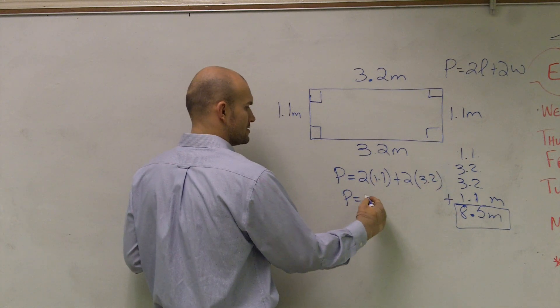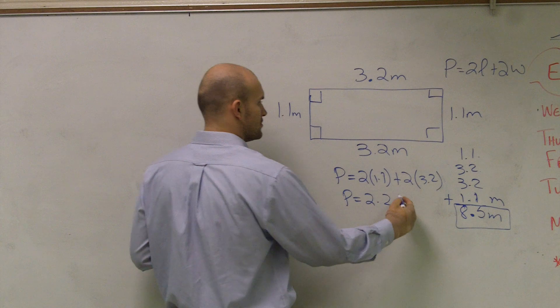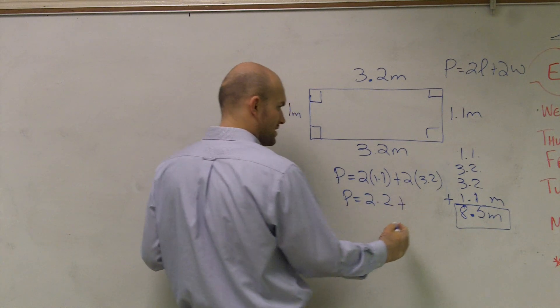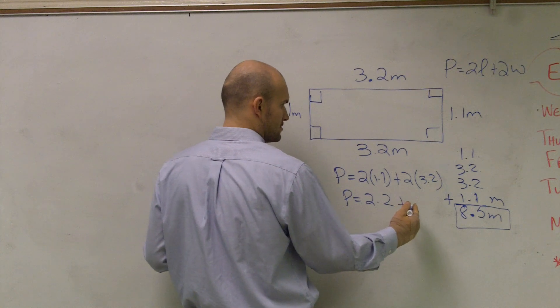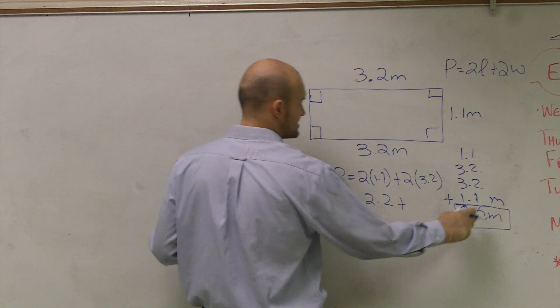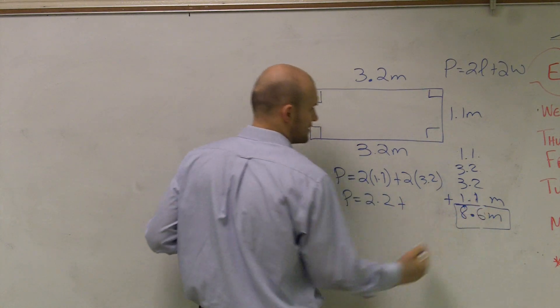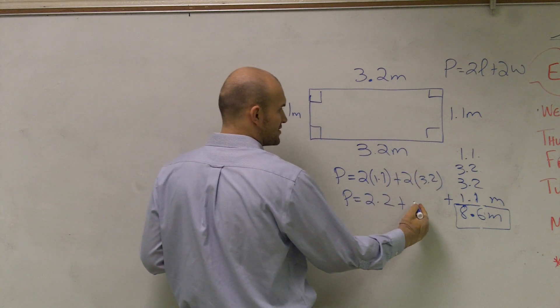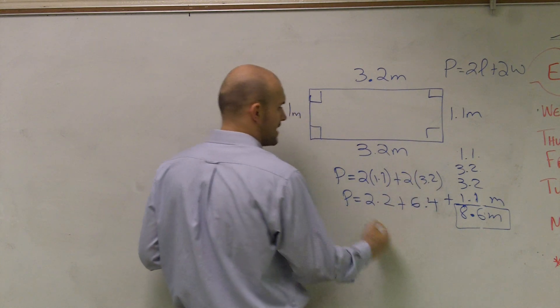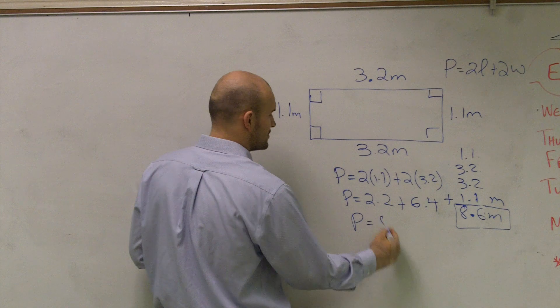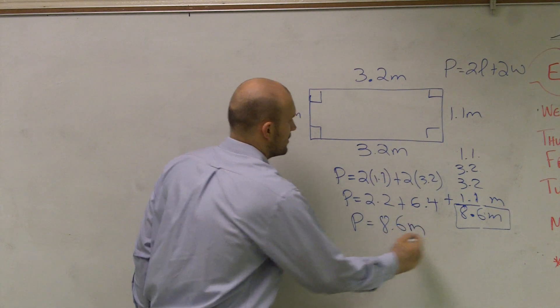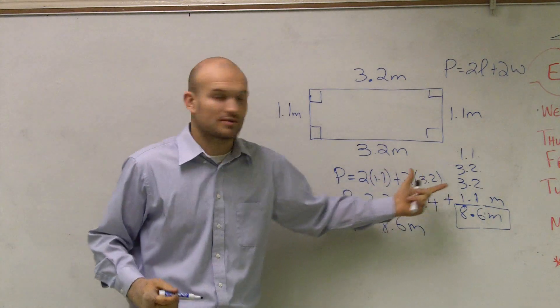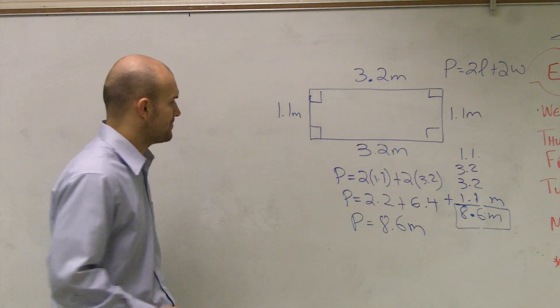And therefore, perimeter equals 2.2, and here is going to equal 2.2. 2 times 3.2 is going to be 6.4. Add this up, perimeter equals 8.6 meters. So that's where you have perimeter. I should have probably gave you both ways to add them up.